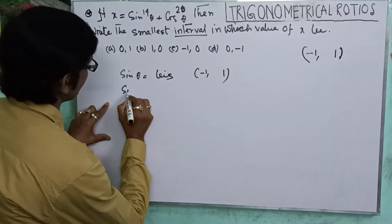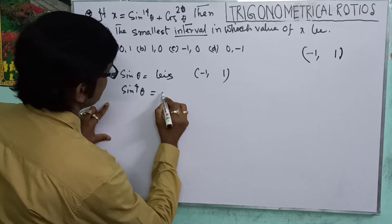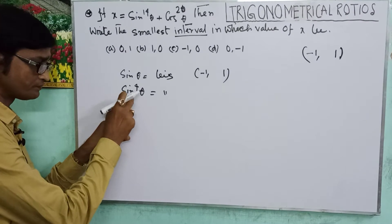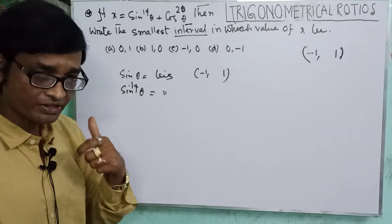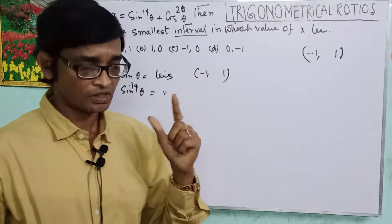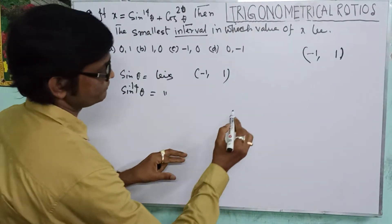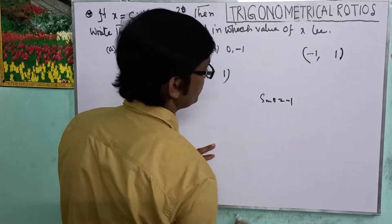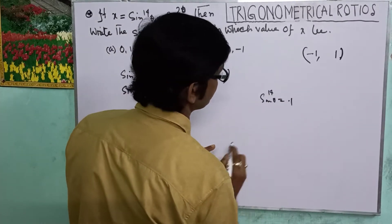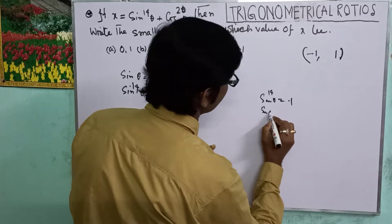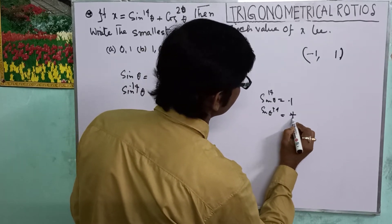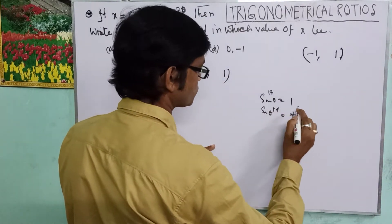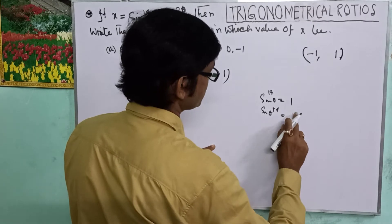Most important place here friends - the power is even. Even. When the power is even, suppose sin theta equal to minus 1, then sin squared 14 theta equal to minus 1 squared. Sin theta minus 1, then sin squared is plus 1. So the range becomes 0 to 1.